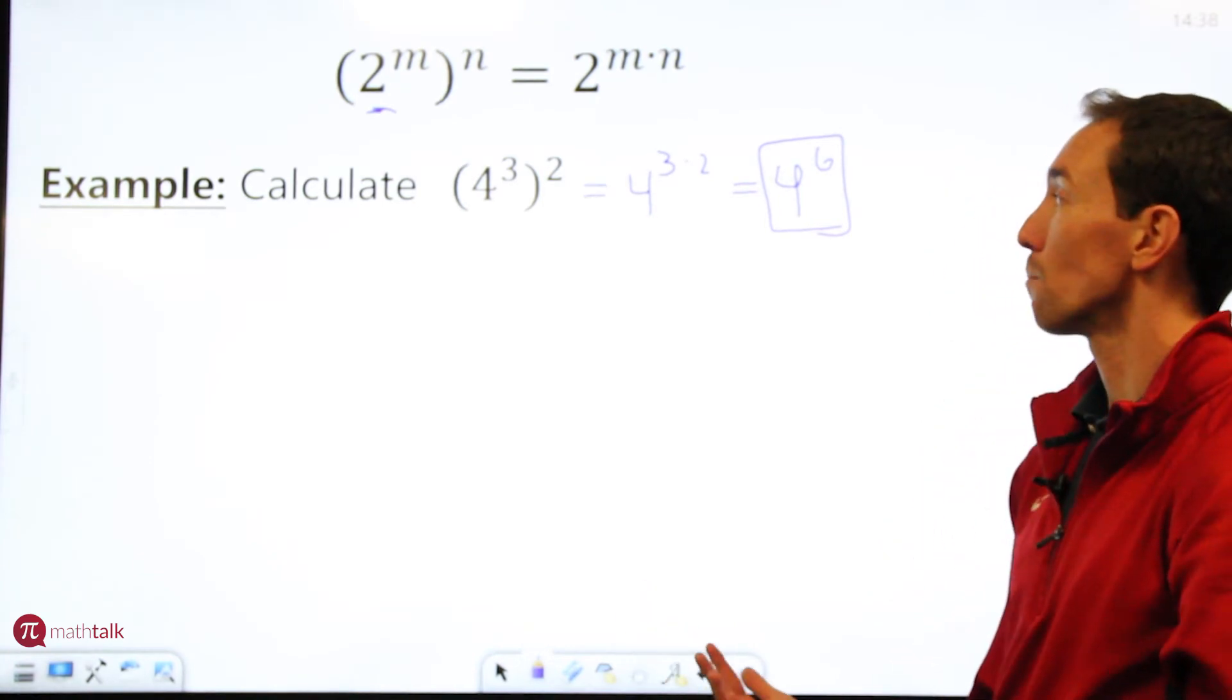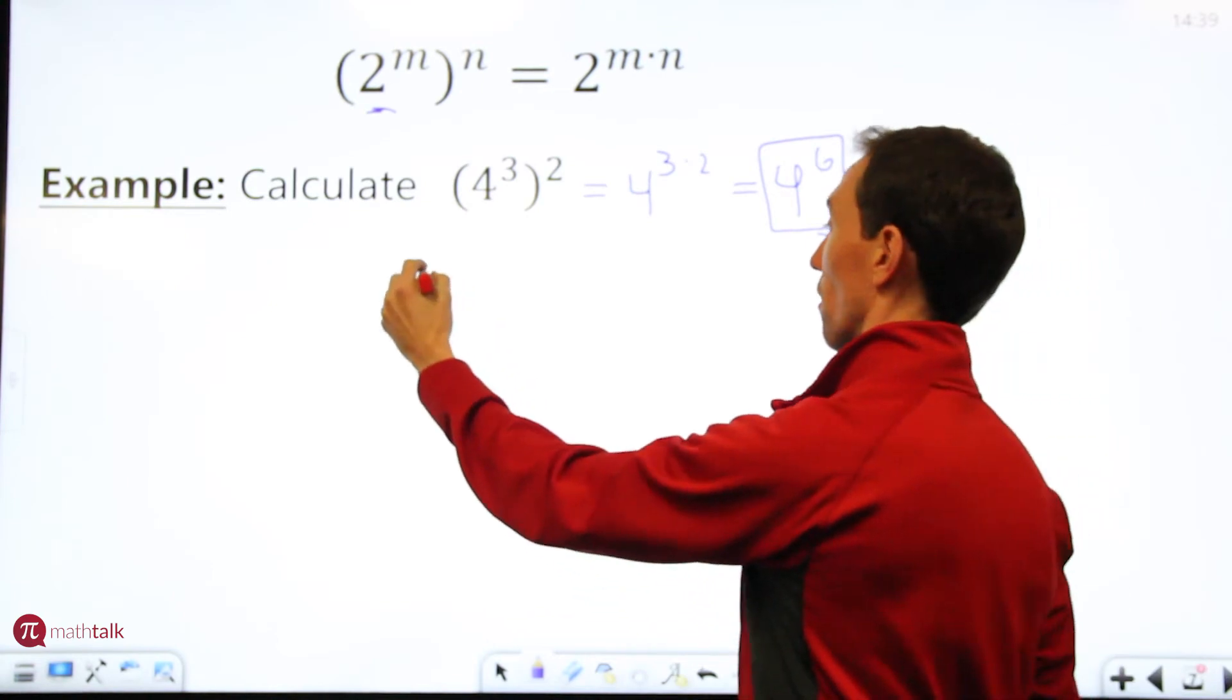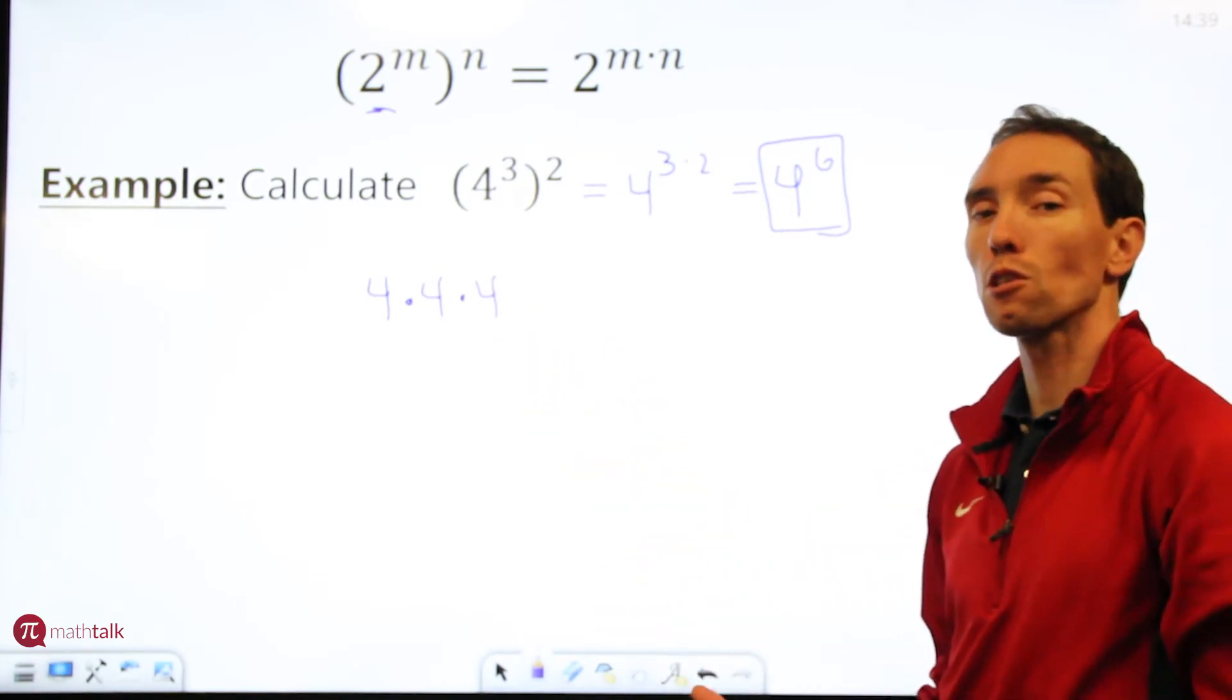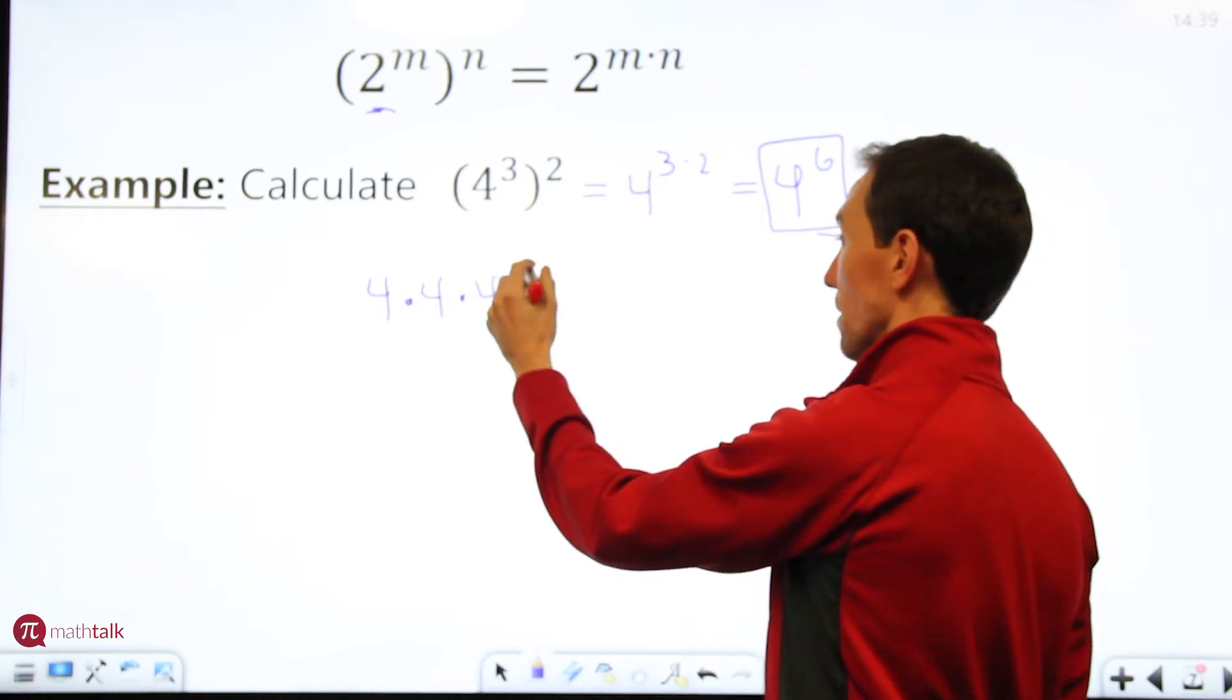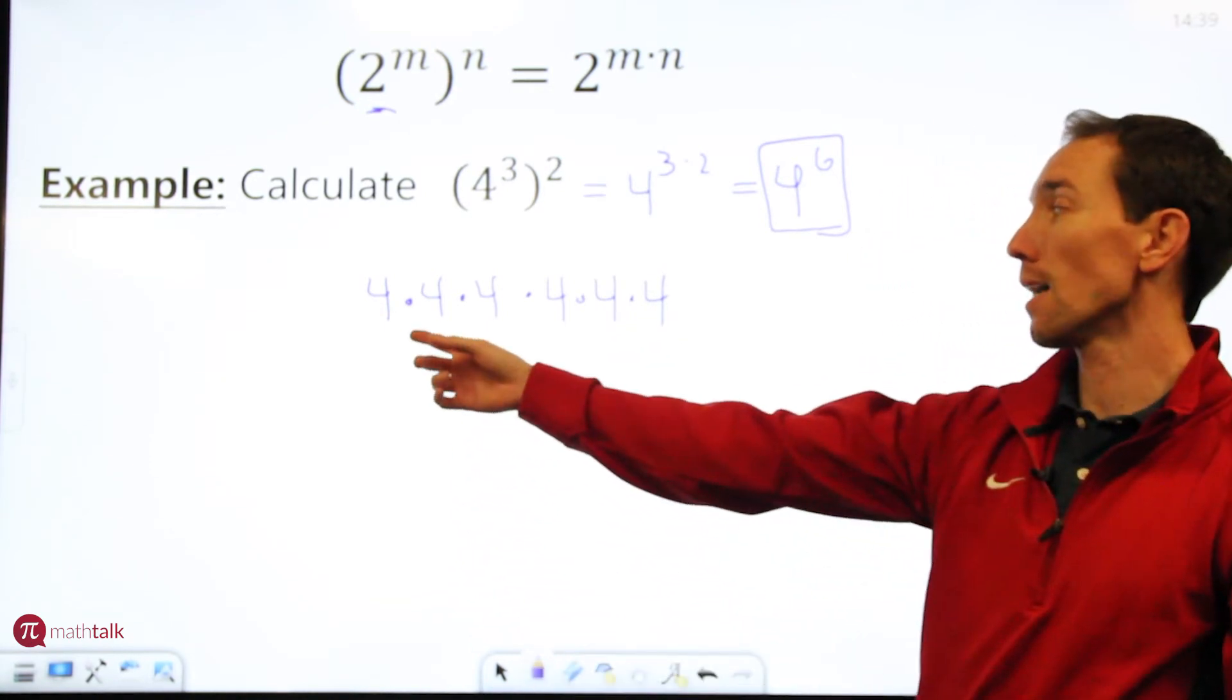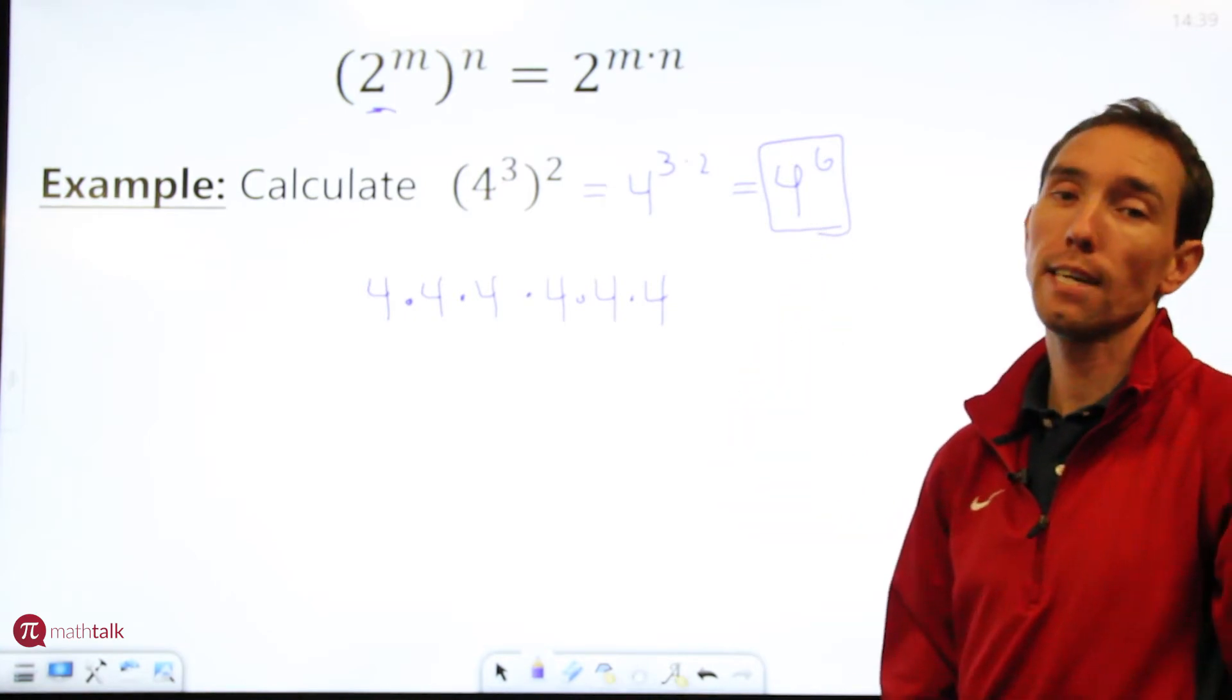The reason why this is so simple is because let's kind of break it down a little bit. You have 4 to the third which is 4 times 4 times 4 and you have that quantity squared. Well if you square something you multiply it by itself. So this times itself is just basically 4 times 4 times 4 and if you count this out you have 4 times itself 6 times. So 4 to the sixth and there's your answer.